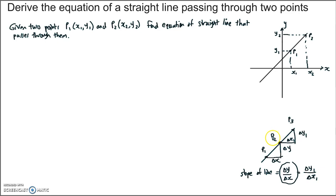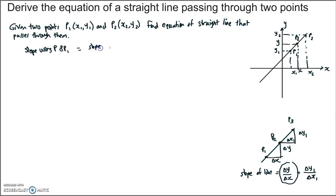That's how we're going to derive the equation of the straight line. We're going to pick a general point P on the line — it doesn't have to be between P1 and P2, but for simplicity we'll place it there — and give it the coordinates x and y. We're going to write the slope of the line using P and P1, then equate it to the slope computed using P2 and P1.